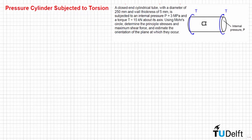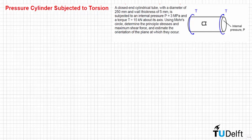In this problem we have a closed-end cylindrical tube with a diameter of 250 mm and a wall thickness of 5 mm, which is subjected to an internal pressure p equal to 3 MPa and a torque t equal to 15 kN·m about its axis. Using Mohr's circle, we need to determine the principal stresses and the maximum shear stress, and estimate the orientation of the planes at which they occur.